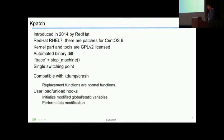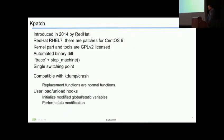K-patch has a single switching point, meaning either the new patch is running or the patch module load failed and the old patch keeps running. It's safe because of stop machine. It is also compatible with kdump and crash — a new function is agnostic to kdump and crash, so you'll see everything similar to what it was. K-patch also has user hooks.